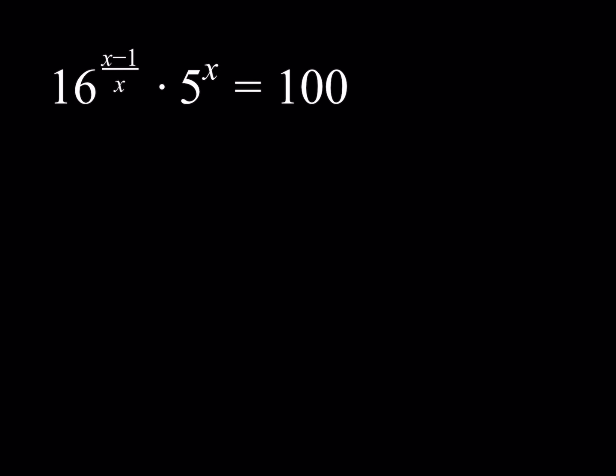But how can I get 4 from 16? I can square root it. How can I get 25? I can use x equals 2. So, suppose x equals 2. Then what happens? You get 16^((2-1)/2) · 5^2. 2 minus 1 is 1, 1 half. So this becomes 16^(1/2) · 5^2. And this is square root of 16 multiplied by 25, and that is 4 times 25, and it is equal to 100. Awesome.